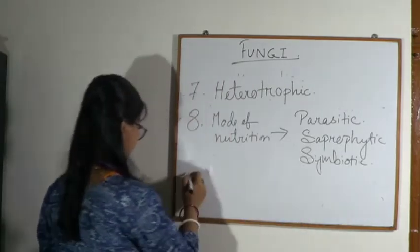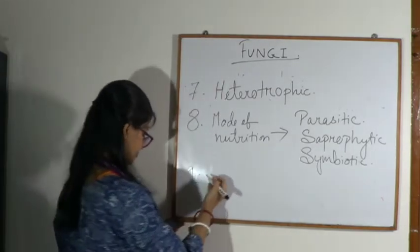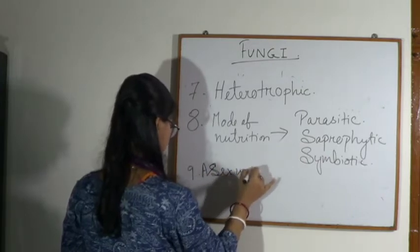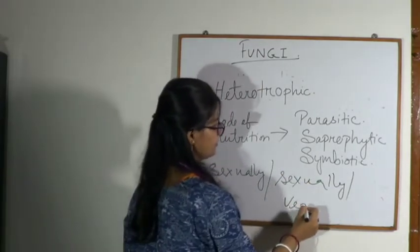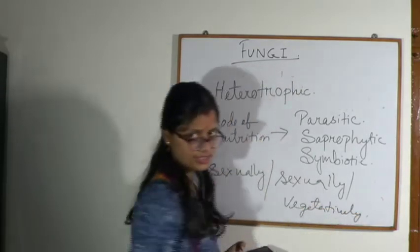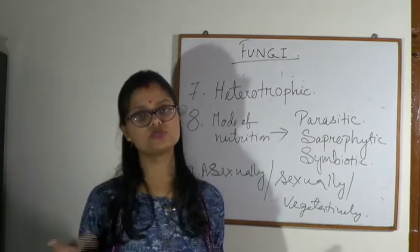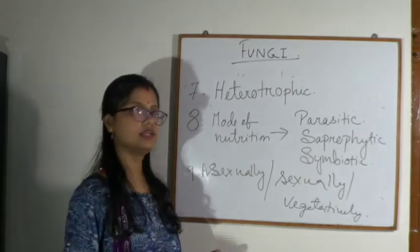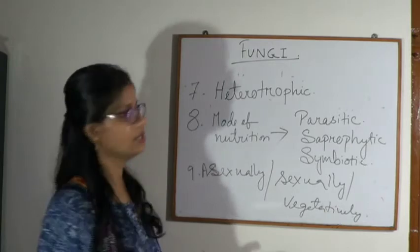Fungi reproduce asexually, sexually, and vegetatively. These three processes are present in fungi. However, not all three are always present in a single fungus — in some fungi only vegetative reproduction occurs, in some only sexual, in some only asexual. And sometimes in one fungus both asexual and sexual reproduction are present.